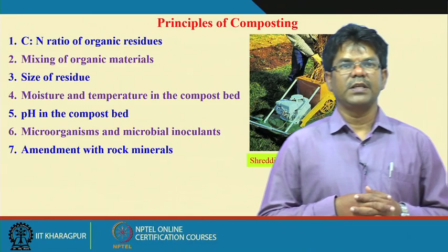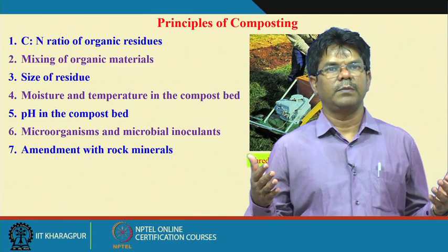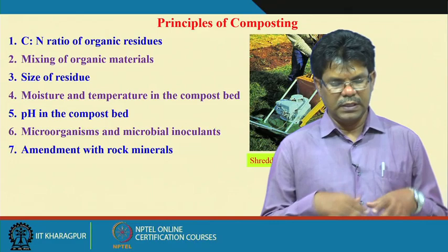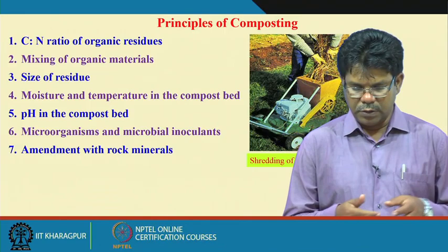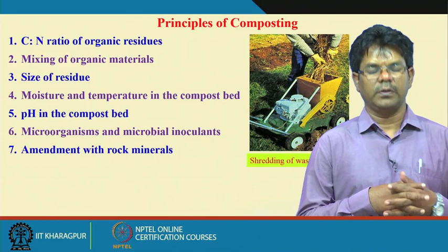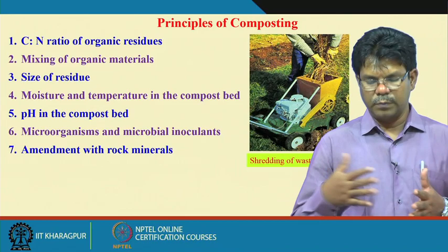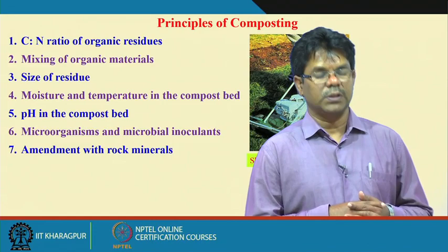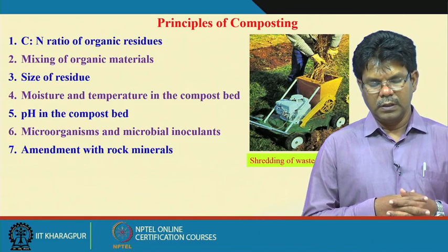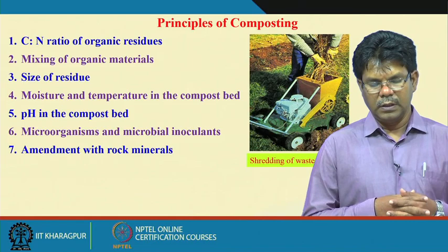The third principle is size of residue. Larger size residue takes longer time for microbial decomposition, so size must be reduced to a comfortable range to increase surface area and make decomposition faster. The fourth and fifth principles are moisture and temperature in the compost bed — what range of moisture and temperature should be maintained so that earthworms and microorganisms get a better environment for decomposition. The sixth principle is pH in the compost bed. The seventh is microorganisms and microbial inoculants applied to the compost bed for quicker decomposition and enriching the quality of the compost.